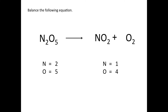Generally it's easier to start with an element that appears in just one compound on each side of the reaction arrow. I'll start with nitrogen. I have two nitrogen atoms on the reactant side and only one on the product side, so I'll put a 2 in front of NO2. That gives me two nitrogen atoms and a total of four oxygen atoms from the two NO2 molecules, plus two more from the O2, for six oxygen atoms on the product side.